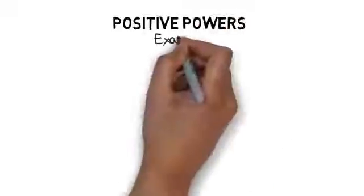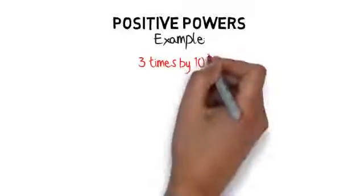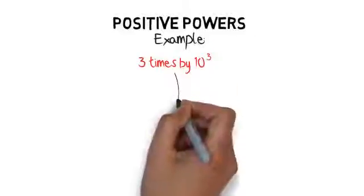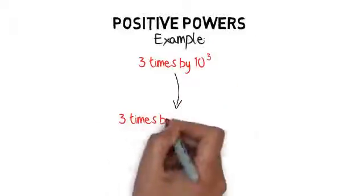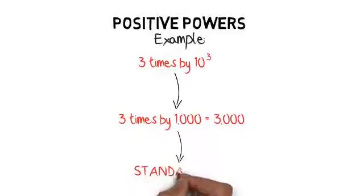Let's start off with positive powers. Let's take this example: 3 times 10 to the power of 3. We notice that the index is positive, so 3 times 10³ means 3 times 1000, which equals 3000. This can all be written in standard form.